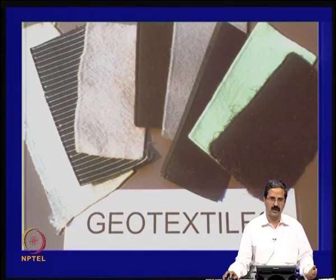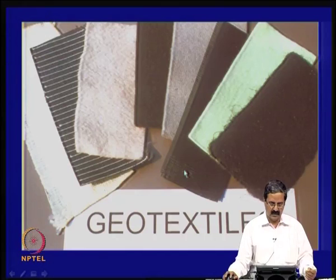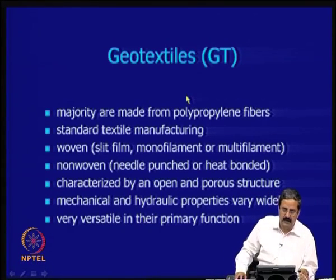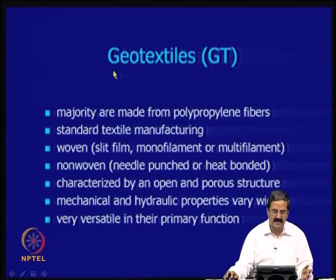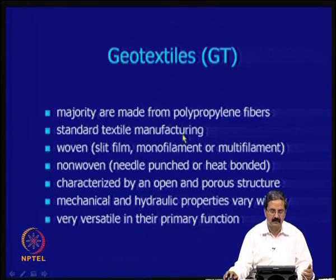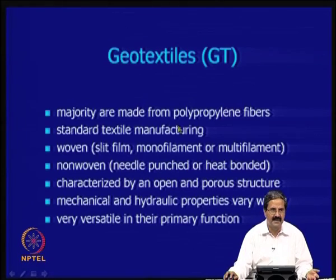Even in structural design, people have been using geomembranes in bridge abutments — it has wide applications. Geotextiles can be from various types of fabrics. They are normally from polypropylene, polyester, PVC — many types of polymers. Essentially, geotextiles are from polypropylene fibers with standard textile manufacturing. Many companies — for example, Reliance, Madhura Mills — manufacture geotextiles in India.